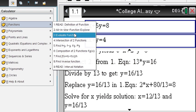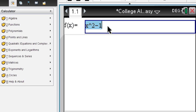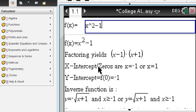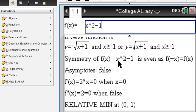Functions. Let's look at all in one function explorer. X squared minus 1 for example. You can see how a function is factored. The x and y intercepts. Inverse function. Symmetry. Asymptotes. Derivatives. Mins and maxes. Anything you need to know.